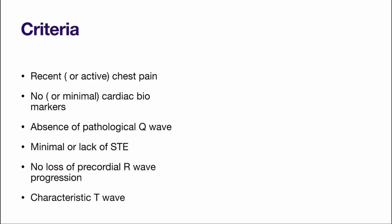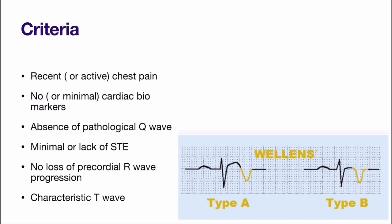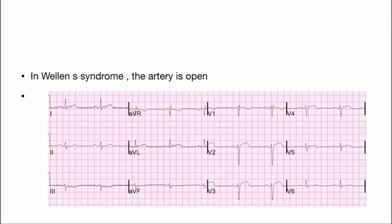The criteria for Wellens syndrome include: recent or active chest pain, no or minimal cardiac biomarkers, absence of pathological Q-waves, minimal or lack of ST elevation, normal precordial R-wave progression, and characteristic T-wave changes. There are two types: Type A has biphasic T-waves in precordial leads, and Type B has deep symmetrical T-wave inversions. Always remember that in Wellens syndrome, the artery is open. Even though the patient may be asymptomatic with negative cardiac biomarkers, the patient requires PCI within one week, as it denotes critical LAD occlusion that may progress to complete occlusion at any time.